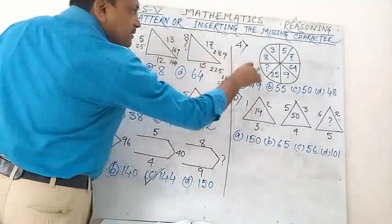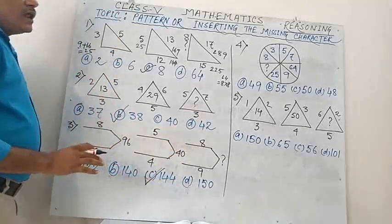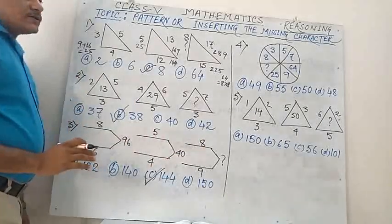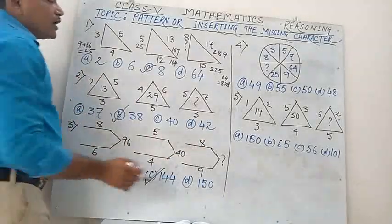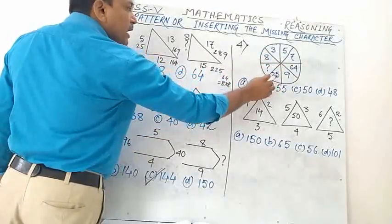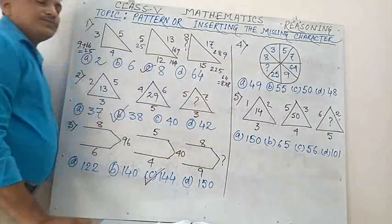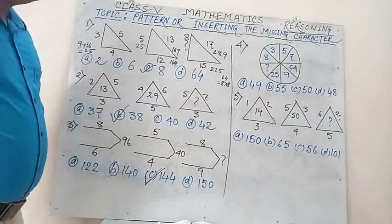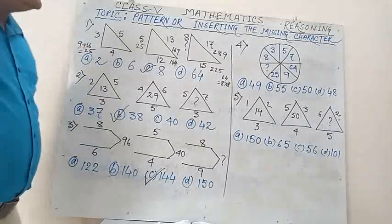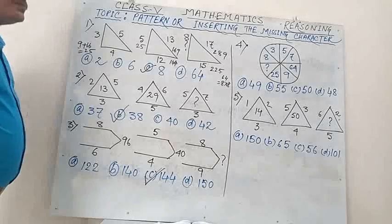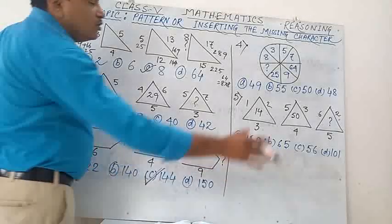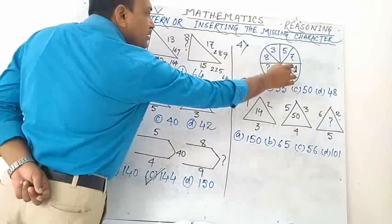Number 4. One circle is there, divided into 8 equal parts. Look at the numbers: 8, 3, 5, 7, 64, 9, 25, and question mark. Find out the relation in this circle — look at the opposite sectors.